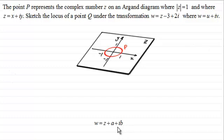To illustrate this, we've got this example: the point P represents the complex number z on an Argand diagram where the modulus of z equals 1 and where z equals x plus iy. We've got to sketch the locus of a point Q under the transformation w equals z minus 3 plus 2i, where w equals u plus iv.